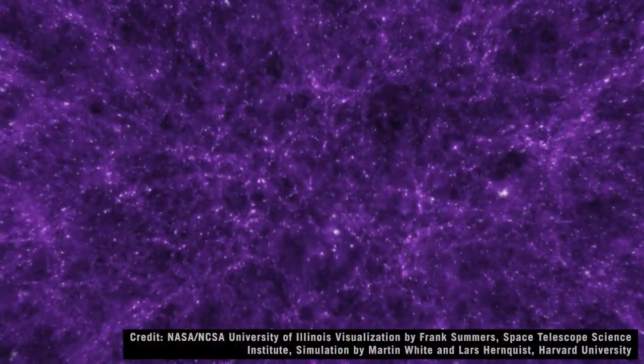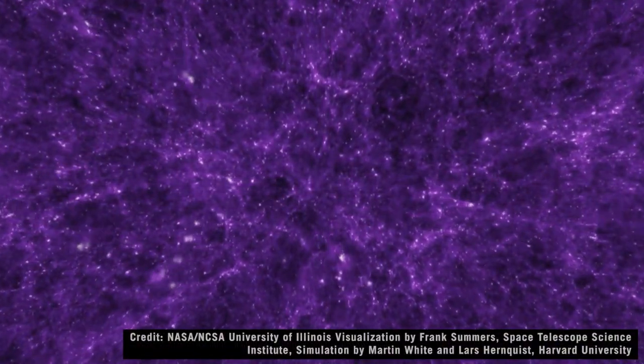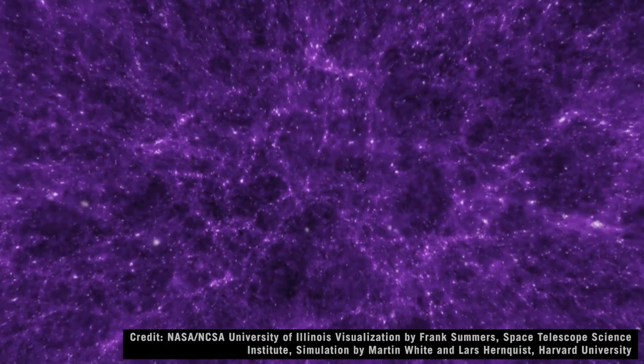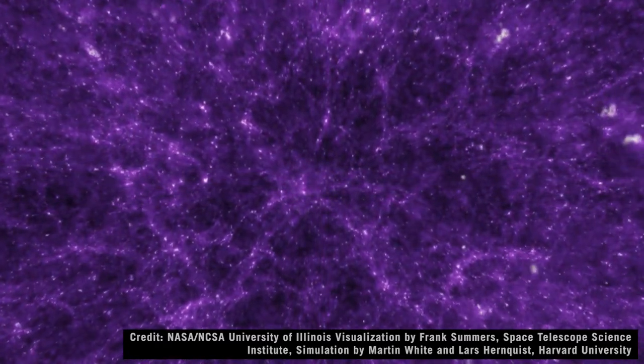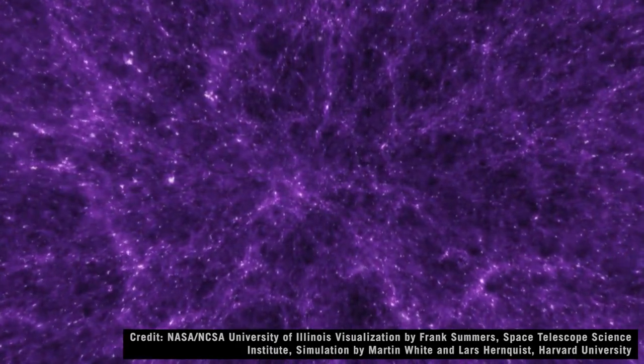So the patterns that are set up by the BAO are actually the seeds of structure that we have today. So by studying these sound waves, we're actually studying the initial conditions that gave us the large scale structure that we have in the universe today, based on the pattern of how galaxies are arranged, kind of in this web-like shape today.